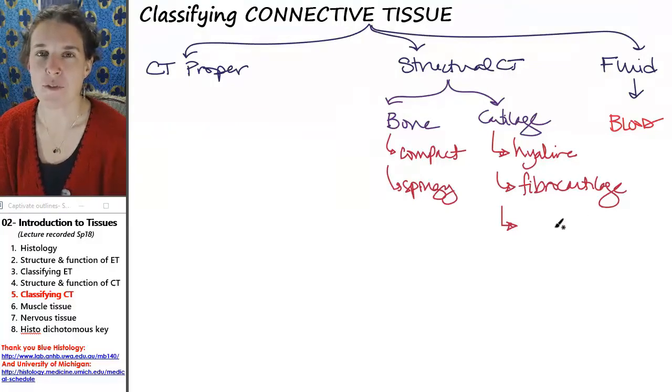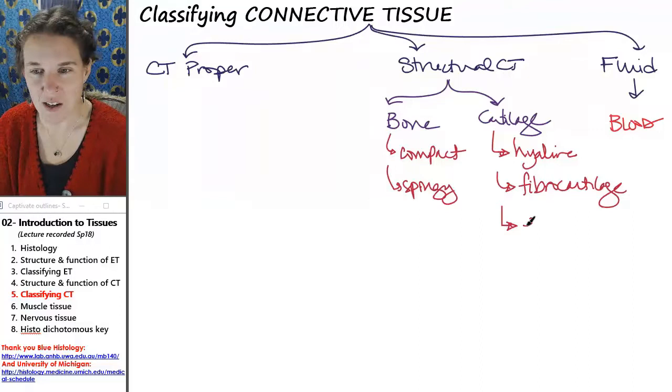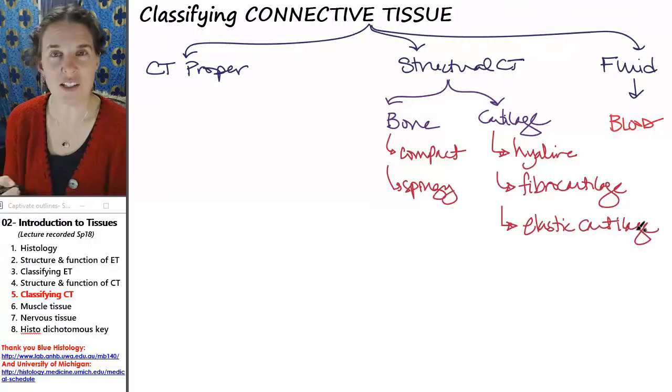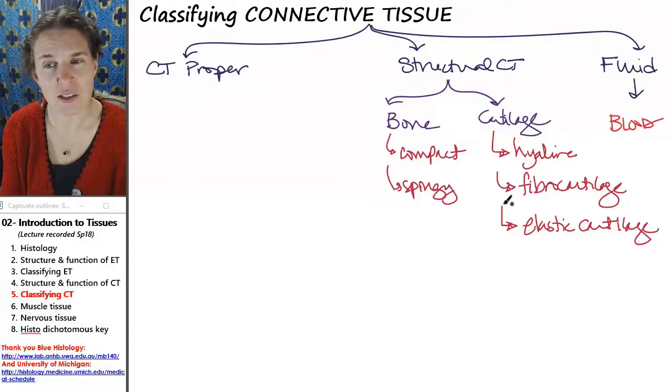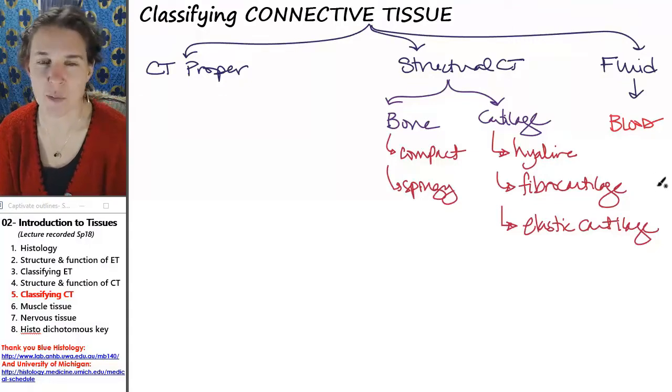And one more, elastic cartilage, which I already mentioned to you. So elastic cartilage, you can imagine, is just full of elastic fibers. All of them have collagen fibers. Hyaline cartilage, you can't really see the collagen fibers so much.